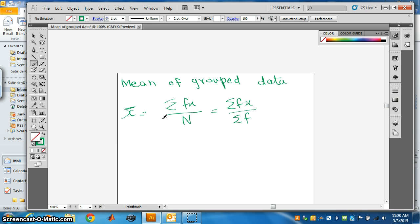x1, x2, xn - these are the midpoints of the class intervals. And f1, f2, fn are the corresponding frequencies.